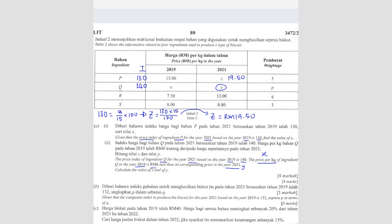We've got two equations here. First, we can form an equation using the price index: 140 equals to Y over X times 100. Simplifying — bring the 100 across as divide and bring X to the other side — so the first equation gives Y equals to 1.4X.